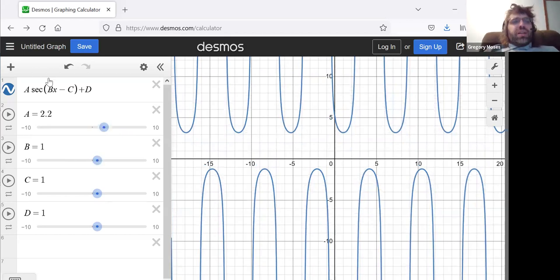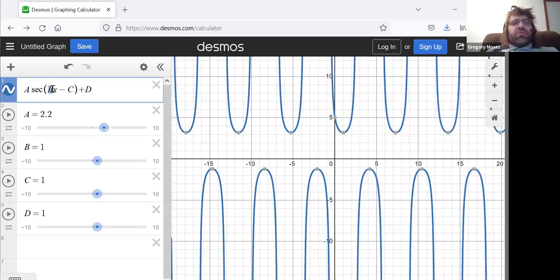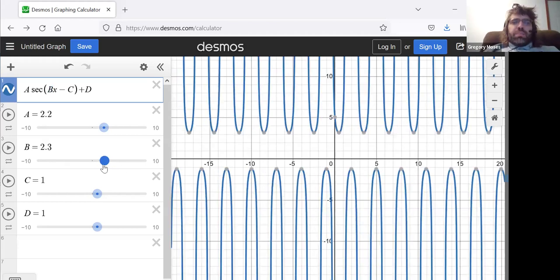B. B has controlled the period of the sine, cosine, tangent, cotangent. So it's either pulled the graphs horizontally or smushed the graphs horizontally. Yep.